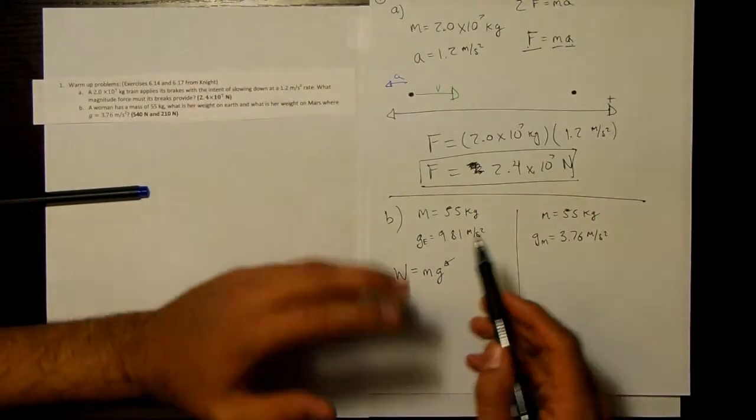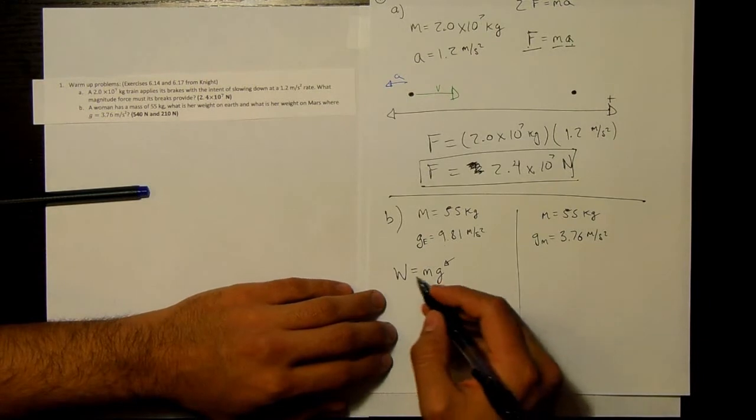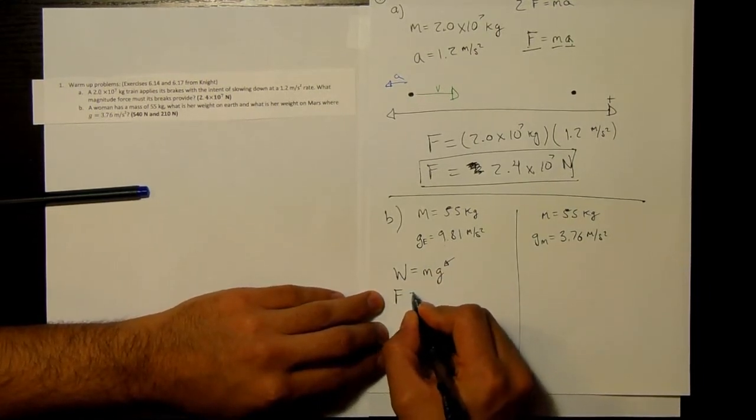we use 9.81 because most of the problems are on Earth, but in this case we use a different number. And this is a special case of F equals MA.